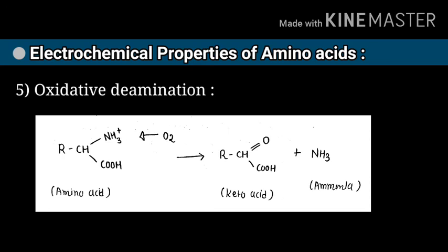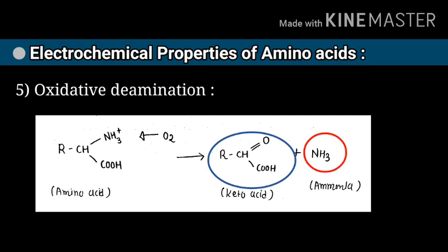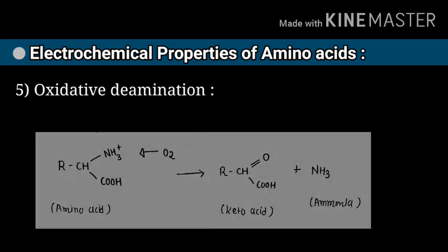The fifth property is oxidative deamination. The word means addition of oxygen and removal of the NH2 (amino) group. Here you see in this reaction oxygen is added on the NH2 amino group site, and then it is removed to form a keto acid and NH3 (ammonia). So these are the five electrochemical properties of amino acids.